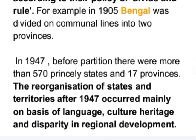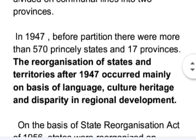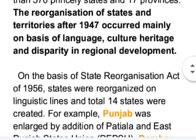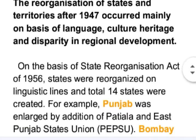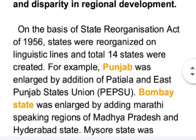In 1947, before partition, there were more than 570 princely states and 17 provinces. The reorganization of states and territories after 1947 occurred mainly on the basis of language, culture, heritage, and disparity in regional development. On the basis of the State Reorganization Act of 1956, states were reorganized on linguistic lines and a total of 14 states were created.